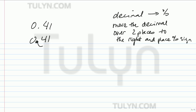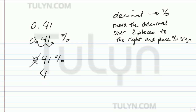.41, this is the decimal. One, two, and percent sign. So just re-copy the number — you don't need the extra zero in front. 41%. You don't need to write the decimal either, because it's understood any whole number has an implied decimal at the right. So 41%.